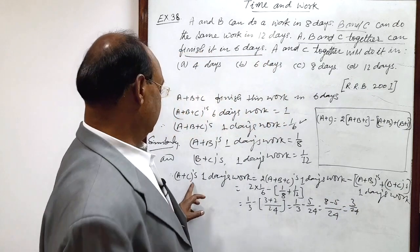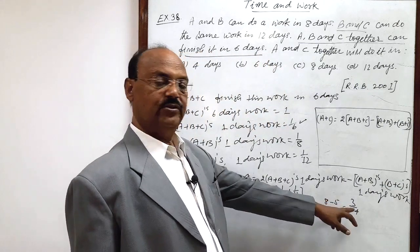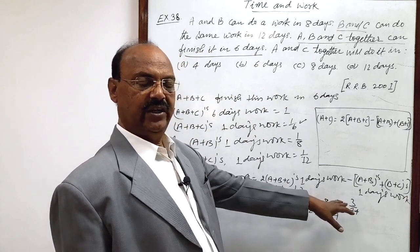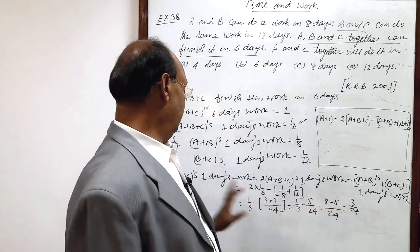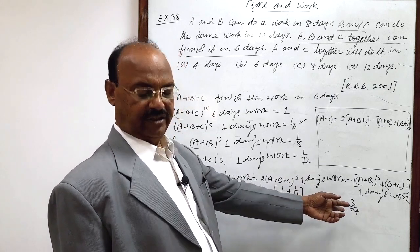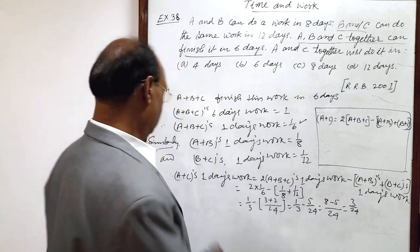This is equal to 3 by 24. So A plus C's 1 day's work is 3 by 24, means 3 by 24 work is being done by A plus C in 1 day. So 1 work will be done in 24 by 3, reciprocal of this. So therefore,